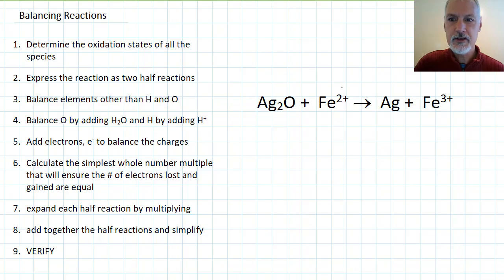First I'm going to determine the oxidation states of all the species that are involved. From the charge I know that charge equals the oxidation state. Here I have an element. Oxygen I know is minus two, making each silver here plus one.